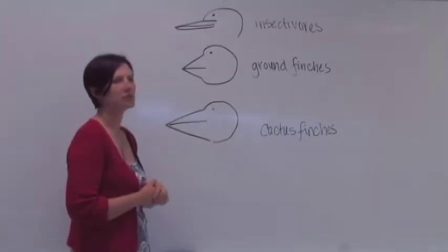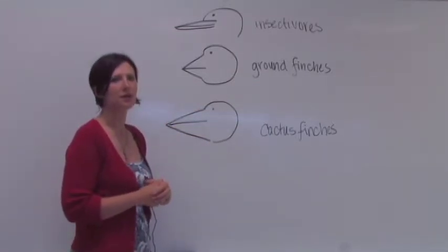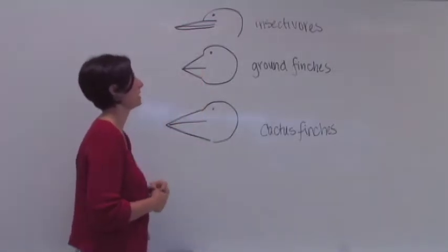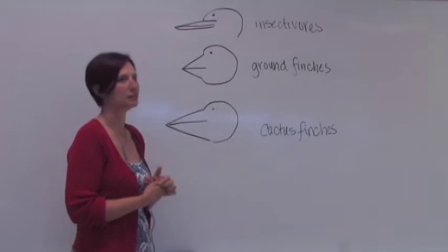Another group of finches fed on the ground, on seeds that were found on the ground, and they had shorter, squatter beaks that were best suited to eating seeds off the ground.